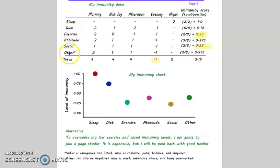If you're wondering what 'other' is, that's categories not listed, such as if you're falling in love, or you have hobbies, you laugh a lot. But it could be negatives, such as grief, substance abuse, or overworked. That's why I got a negative one right there. I was overworked.